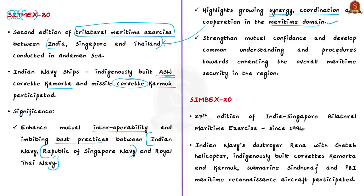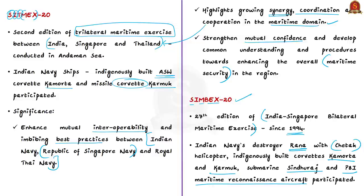Apart from improving interoperability, the Sitmex series also aims to strengthen mutual confidence and develop common understanding and procedures towards enhancing overall maritime security in the Indian Ocean region. The next exercise mentioned is Simbex 20 — the 27th edition of the Singapore-India Maritime Bilateral Exercise, being held at the Andaman Sea. This series has been conducted annually since 1994. The 2020 edition witnesses participation by Indian Navy ships including INS Rana, the Chetak helicopter, indigenously built corvettes Kamorta and Karmuk, submarine Sinduraj, and P-8I maritime reconnaissance aircraft.